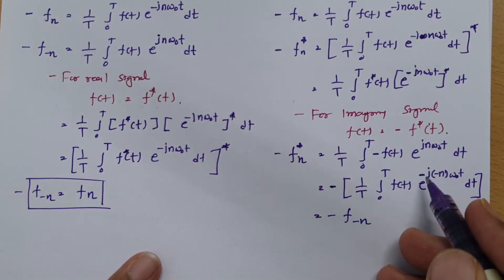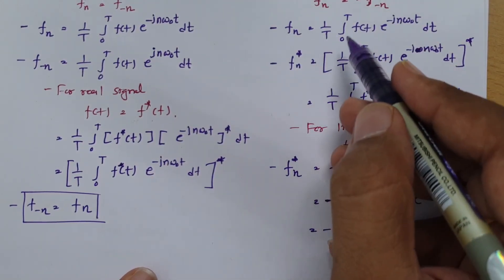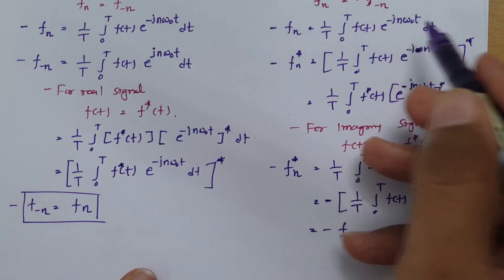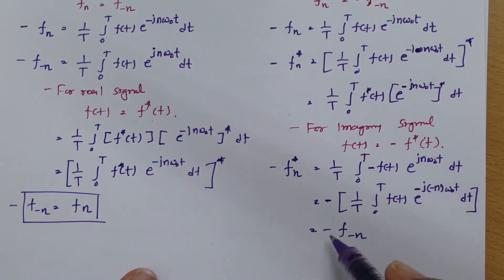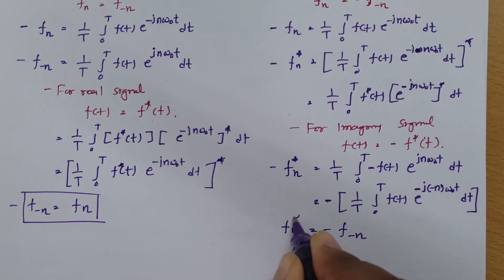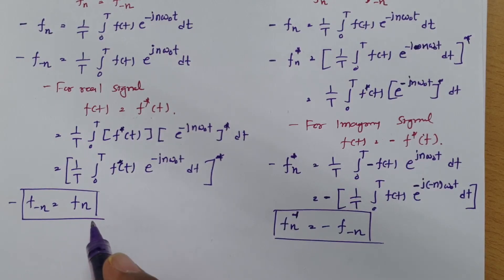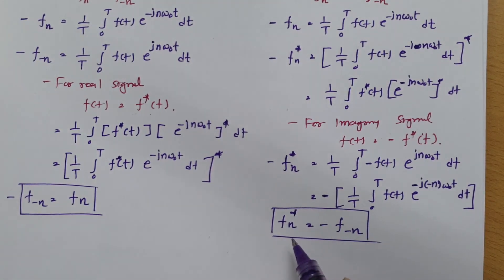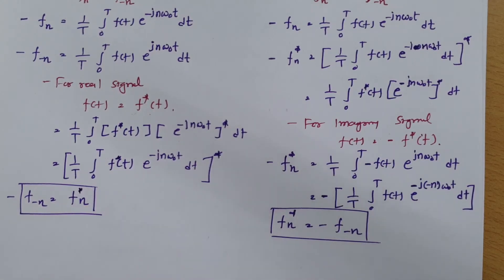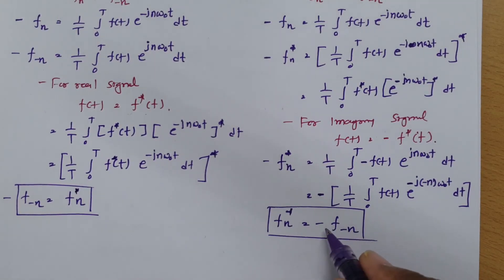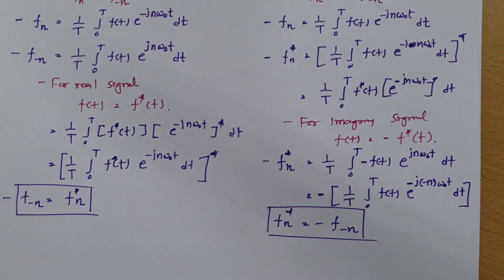So, to summarize the symmetry property of Fourier transform: for real signals, F*(n) = F(−n); for imaginary signals, F*(n) = −F(−n). This is the symmetry property in Fourier transform. Thank you so much for watching. Please give your valuable suggestions, and based on them I will make future videos to solve your queries.